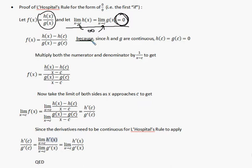So we're starting with h(x) over g(x), and we're saying that the limit as x approaches c of h(x) equals the limit as x approaches c of g(x), and those both equal 0.